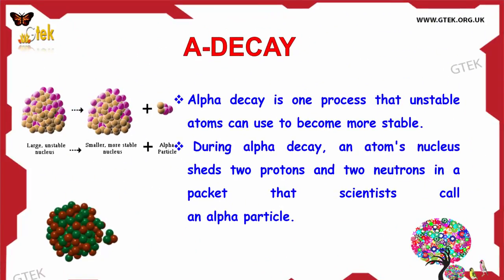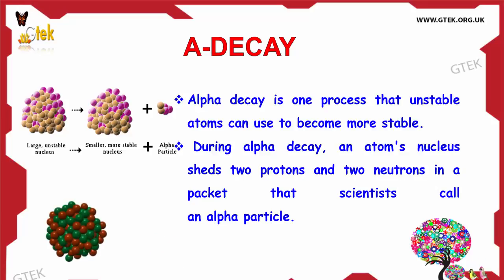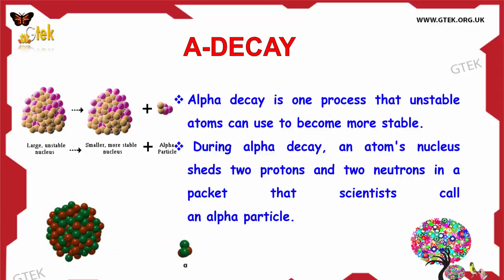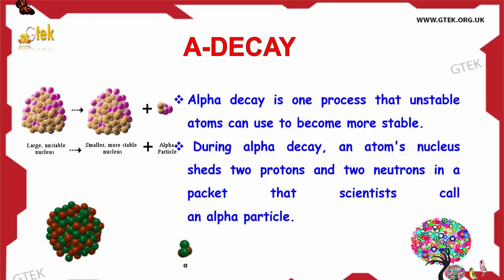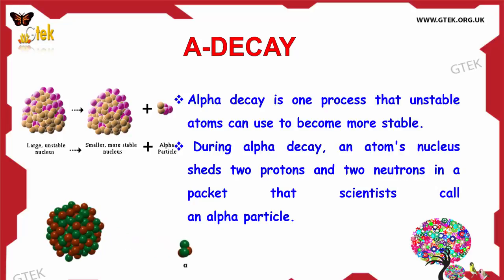Alpha decay is one process that unstable atoms can use to become more stable. During Alpha decay, an atom's nucleus sheds two protons and two neutrons in a packet that scientists call an Alpha particle. The picture below shows the process of generating an Alpha particle.